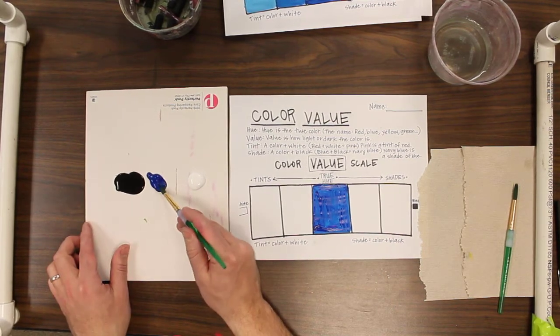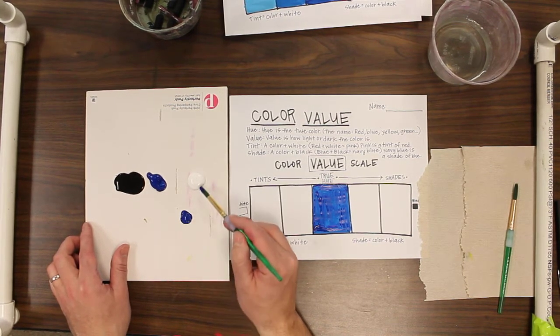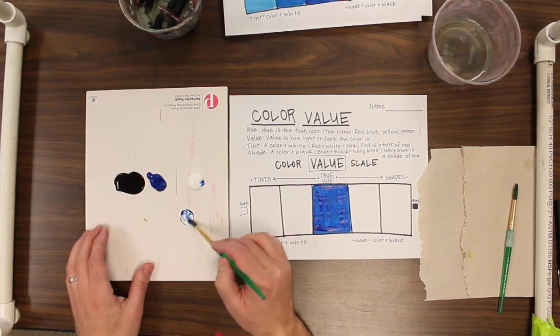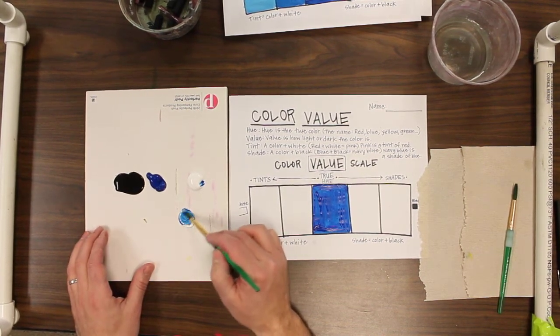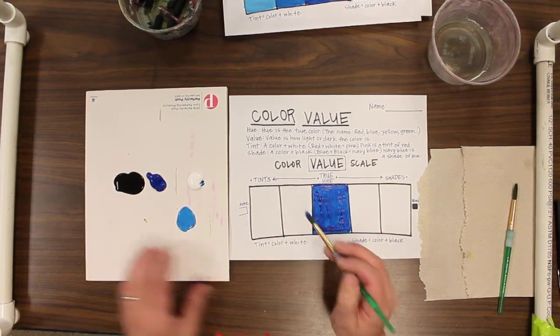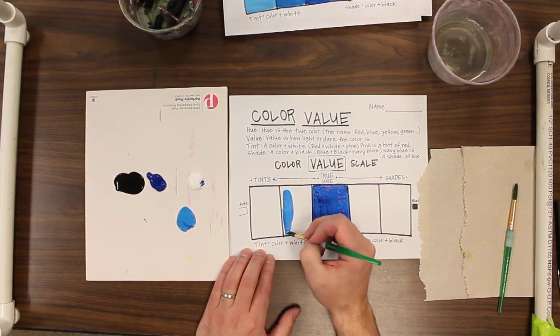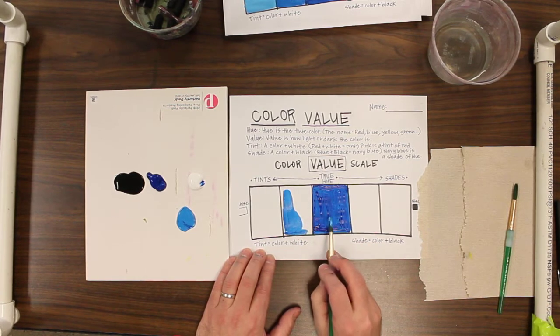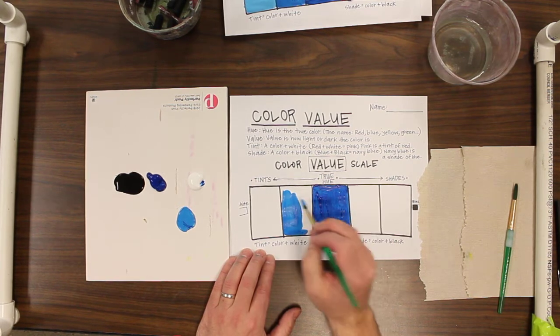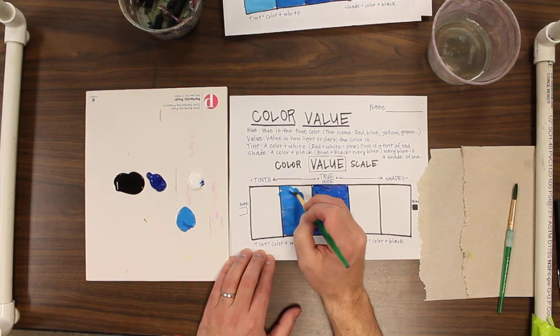Then I'm going to take a little bit of white. I'm not going to mix up all of the white because I want that a little bit lighter. I'm going to make a little bit lighter version of the blue. So I kind of like that. It's a little bit lighter, but it's not too light. I'm going to go ahead and paint that in. It's got to be lighter than that true hue there. If it's the same color or the same shade, then you have to add more white to it.